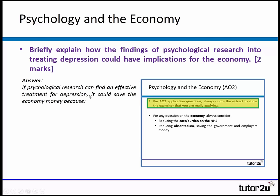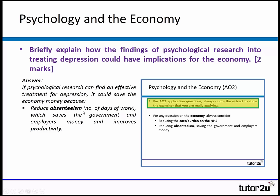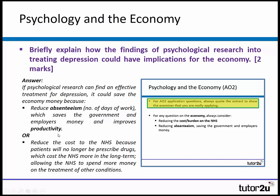For a two-marker: if psychological research can find an effective treatment for depression, it could save the economy money by reducing absenteeism — the number of days off work — which saves the government and employers money and improves productivity. For a four-marker, you'd also add: it reduces the cost to the NHS because patients will no longer be prescribed drugs, allowing the NHS to spend more money on the treatment of other conditions. Those two key ideas — reducing NHS cost and reducing absenteeism — apply to questions in this topic as well.